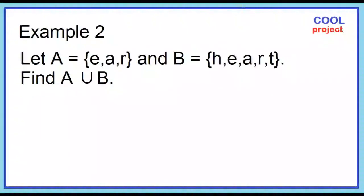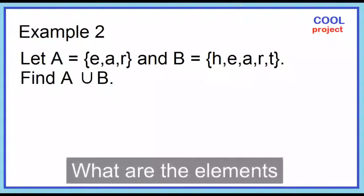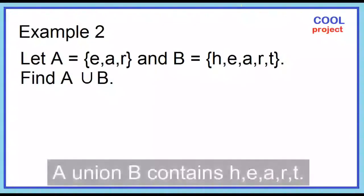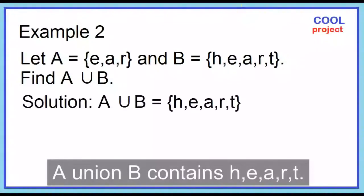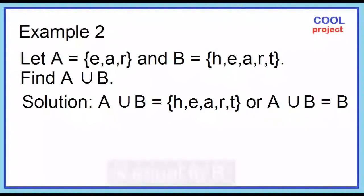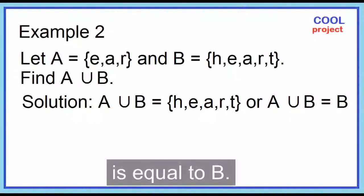Example number 2: Given set A and set B, find A union B. A union B contains H, E, A, R, T. In this example, A union B is equal to B.